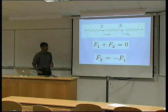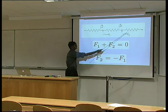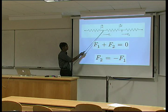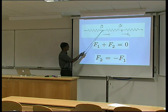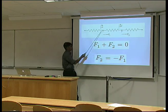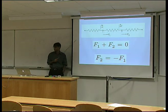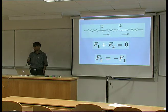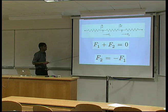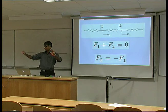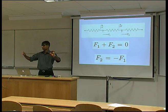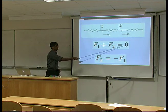Now let's consider this spring which is in a system of springs. I want to develop an equation to relate all the displacements and forces for this particular element, which is between nodes 1 and 2. The nodes are simply the connections between the springs. Once the force has been applied, the system is not moving, so it's at equilibrium.